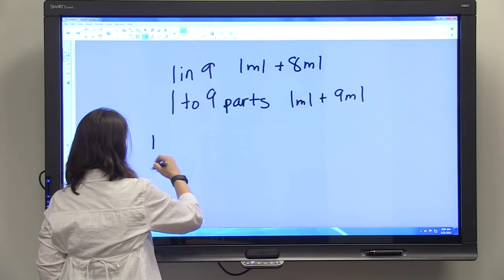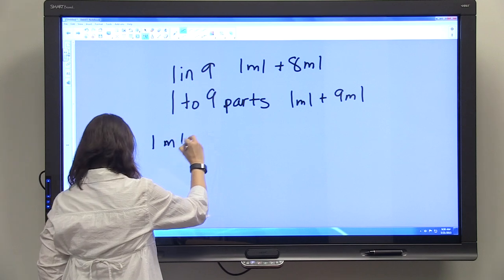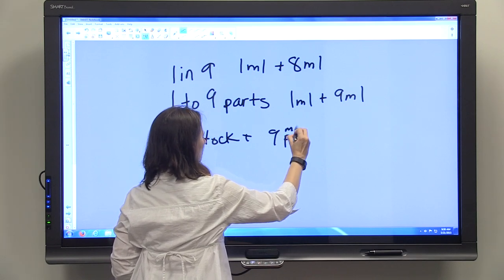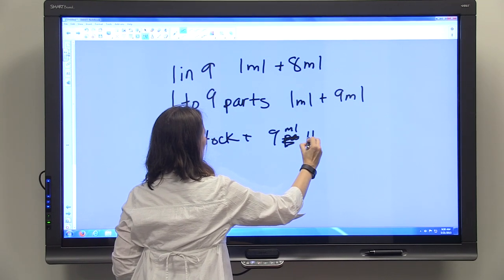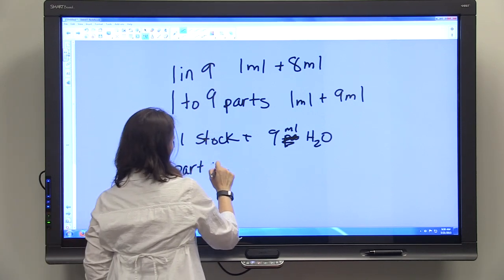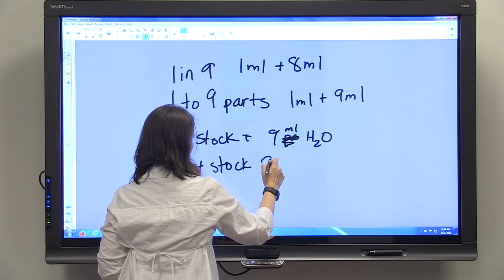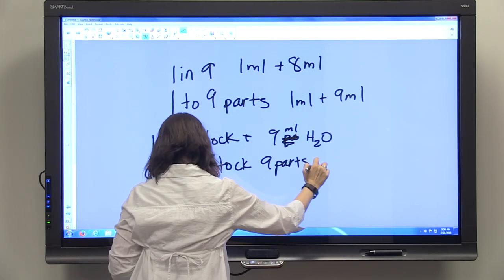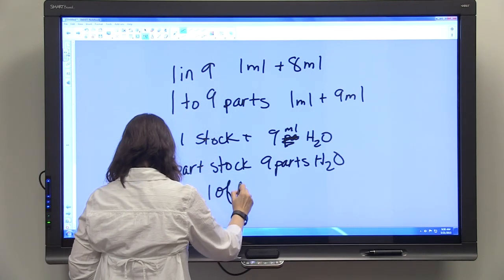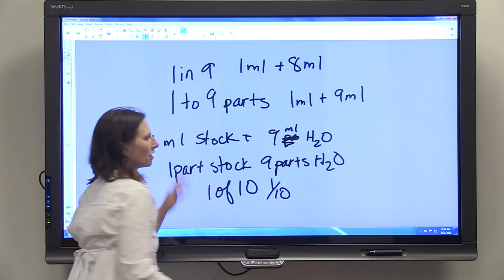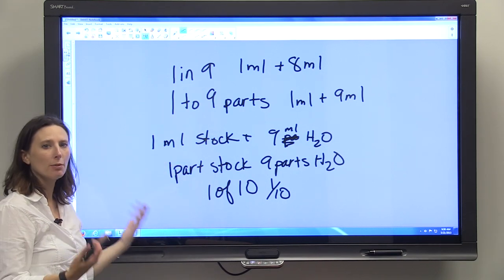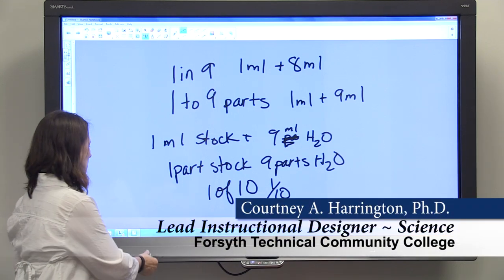Often times in the lab we're going to use the terminology of stock. We'll do 1 ml of stock and 9 parts water or 9 mls. That's also just if you have 1 part stock, 9 parts water. And again, you can go through 1 of 10, 1 tenth. So, these are the ways that might be described. And you just want to be really careful that you're understanding how much diluent you're adding and how much of your stock solution or original solution.